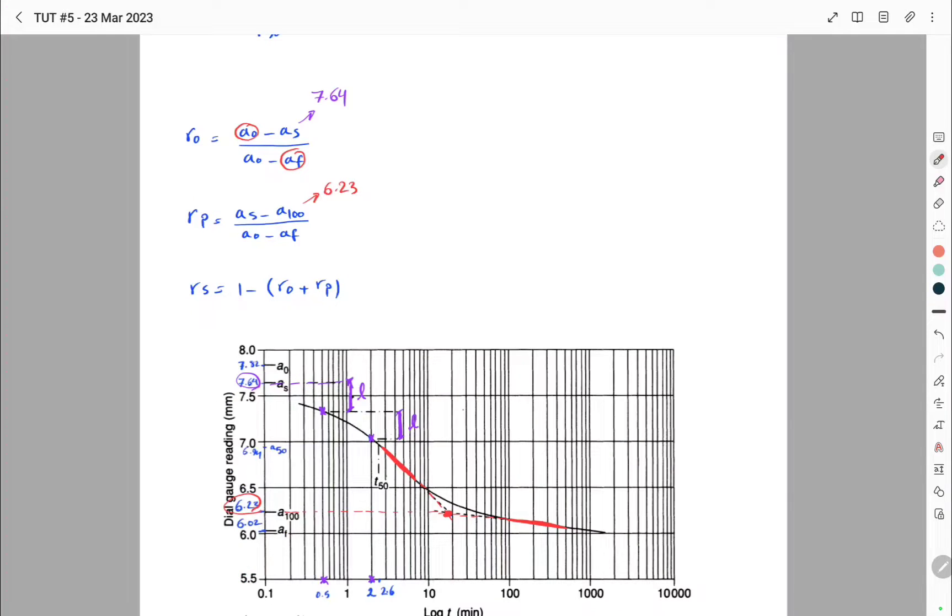Now that we have a100 at this point and AS at this point, the value of A50 would be the average of these two values, which is approximately equal to 6.94. Then if we read the corresponding value of this point on the plot, it will give us T50, which in this question is equal to 2.6 minutes.